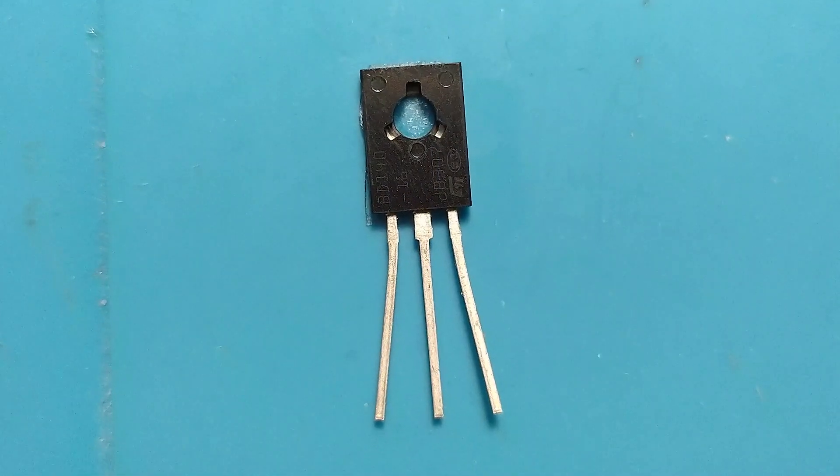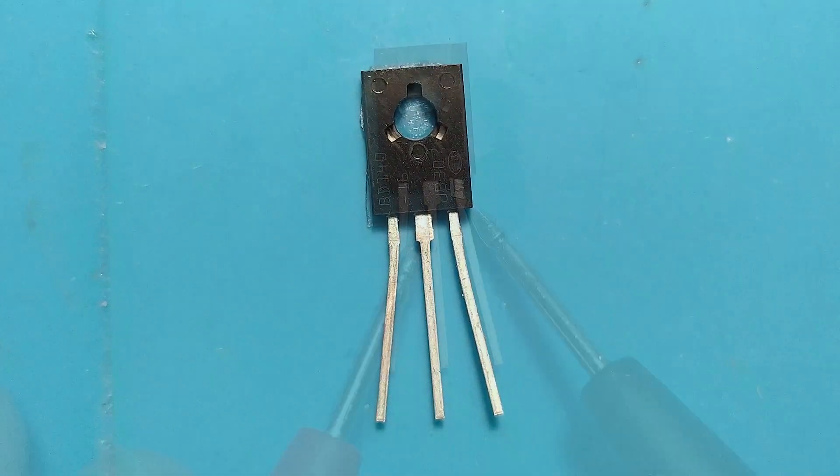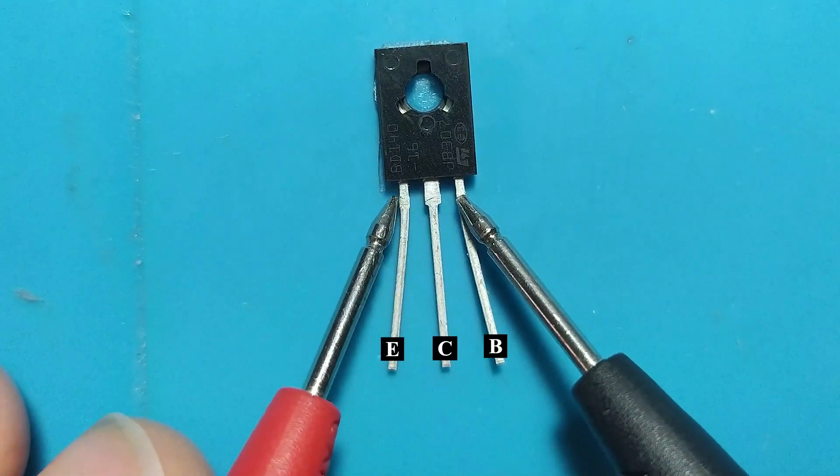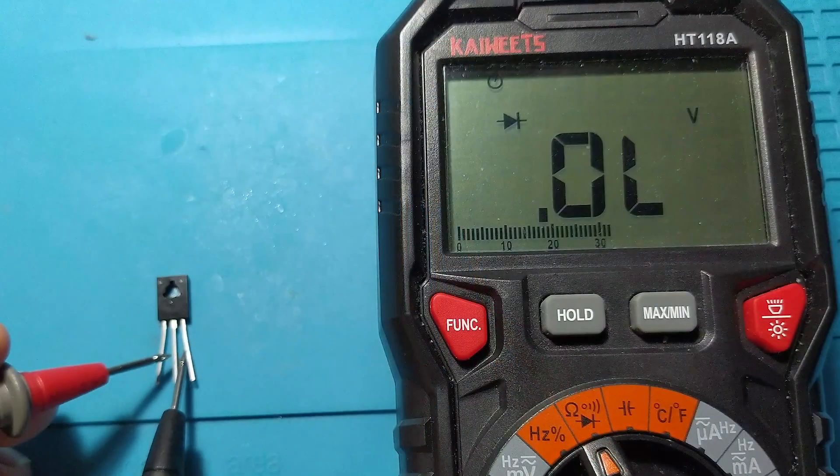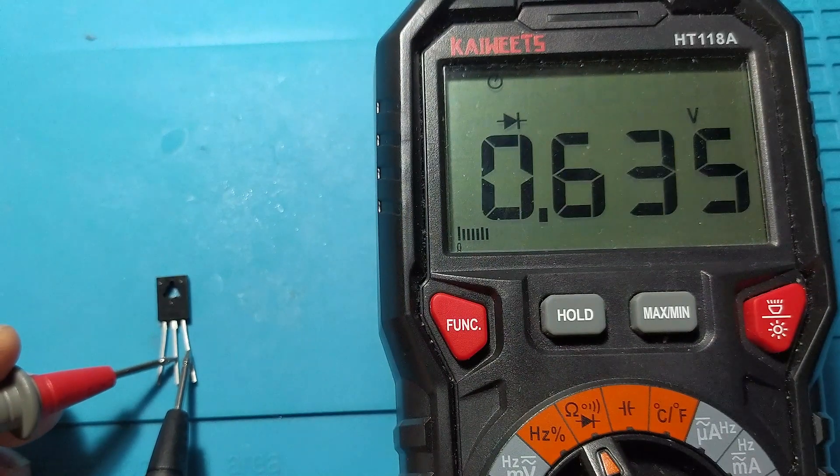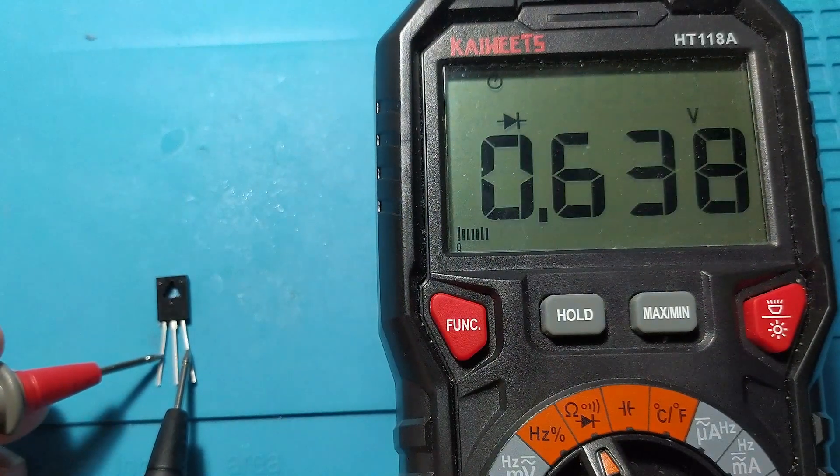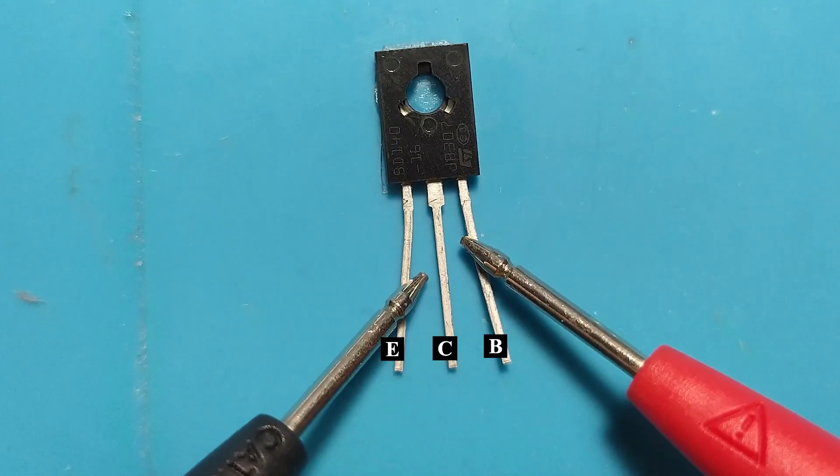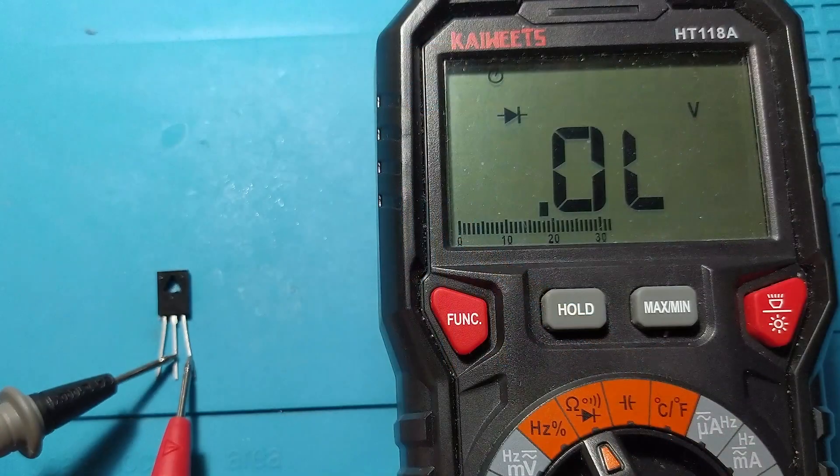Let's also test the BD140 transistor. With the black probe on the base and the red probe on the emitter or collector, we should have a voltage drop of about 600 millivolts. With the red probe on the base and the black probe on the emitter or collector, we should not have any voltage drop.